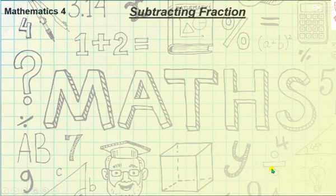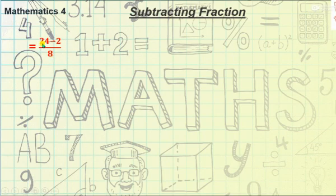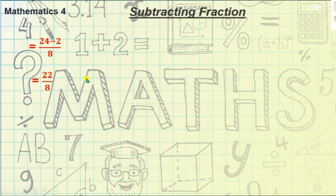Now let's move to our second step: we write the denominator one time and subtract the values of the numerator. 24 minus 2 gives us 22/8.